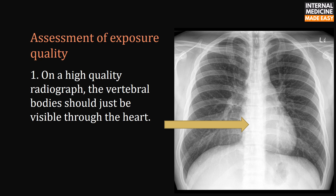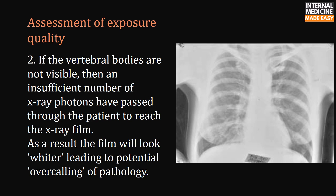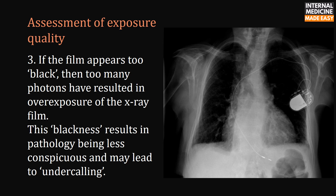Assessment of exposure quality: On a high quality radiograph, the vertebral bodies should just be visible through the heart. If the vertebral bodies are not visible, an insufficient number of x-ray photons have passed through the patient to reach the film — the film will look whiter, leading to potential over-calling of pathology. If the film appears too black, too many photons have resulted in over-exposure; this blackness results in pathology being less conspicuous and may lead to under-calling.